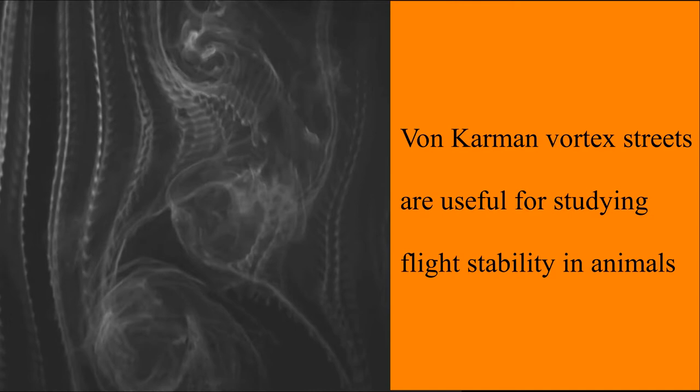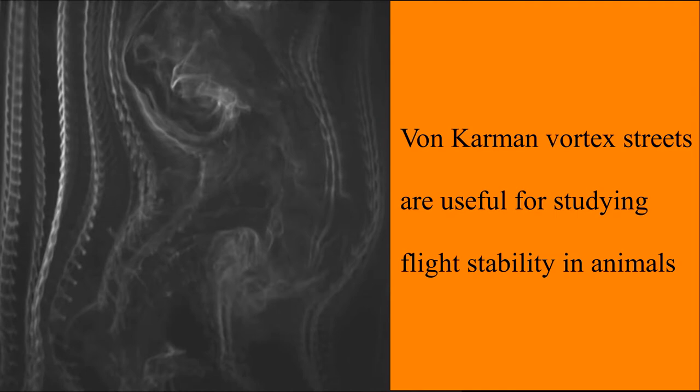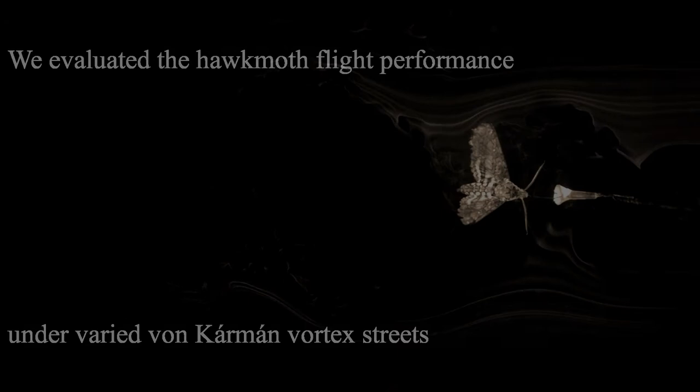Von Karman vortex streets are patterns of alternately shed vortices that form behind objects placed in flows. They are common in nature, but we don't understand how animals that fly navigate them.